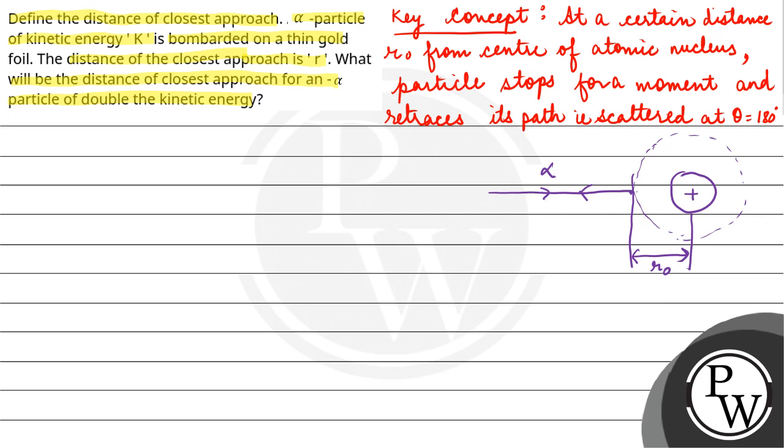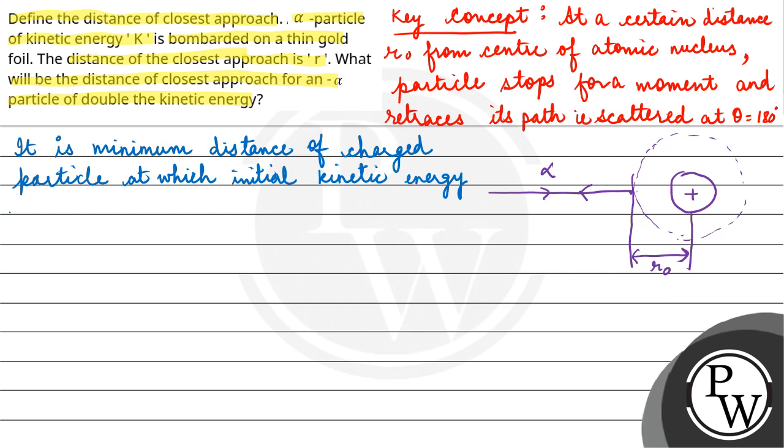So if we define the distance of closest approach, it is the minimum distance of a charged particle at which initial kinetic energy of particle changes into potential energy.